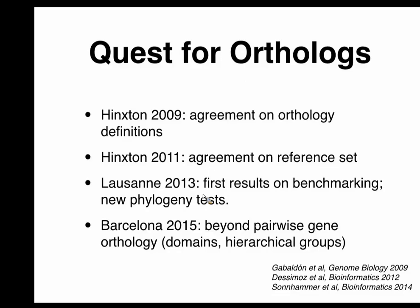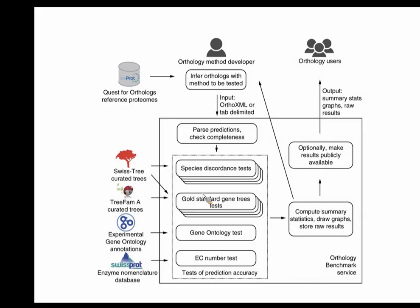I want to report on a new orthology benchmark service we just published this month. The idea is that we have a public reference set, and people who develop methods can run their predictions on it and submit them. A battery of tests is then performed on a web service using different criteria, different reference species trees, and experimental functional annotations — looking at conservation between orthologs versus non-orthologs. Results are summarized and fed back to the submitter, who can then choose to make results public alongside a publication, or keep them private if more work is needed.